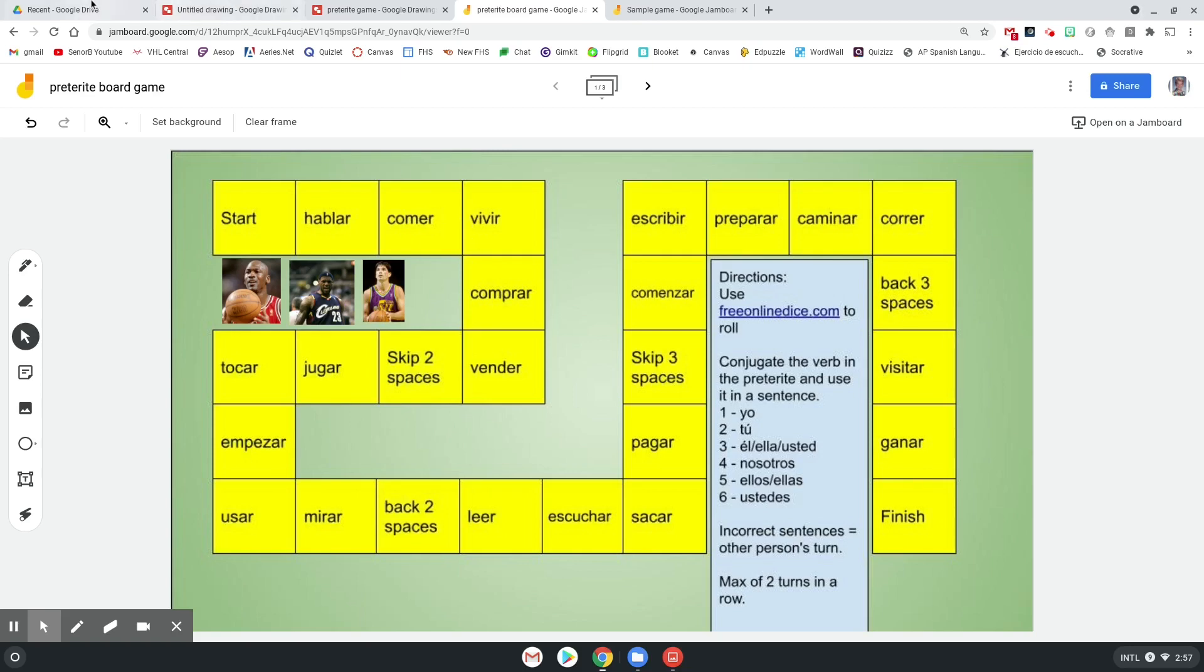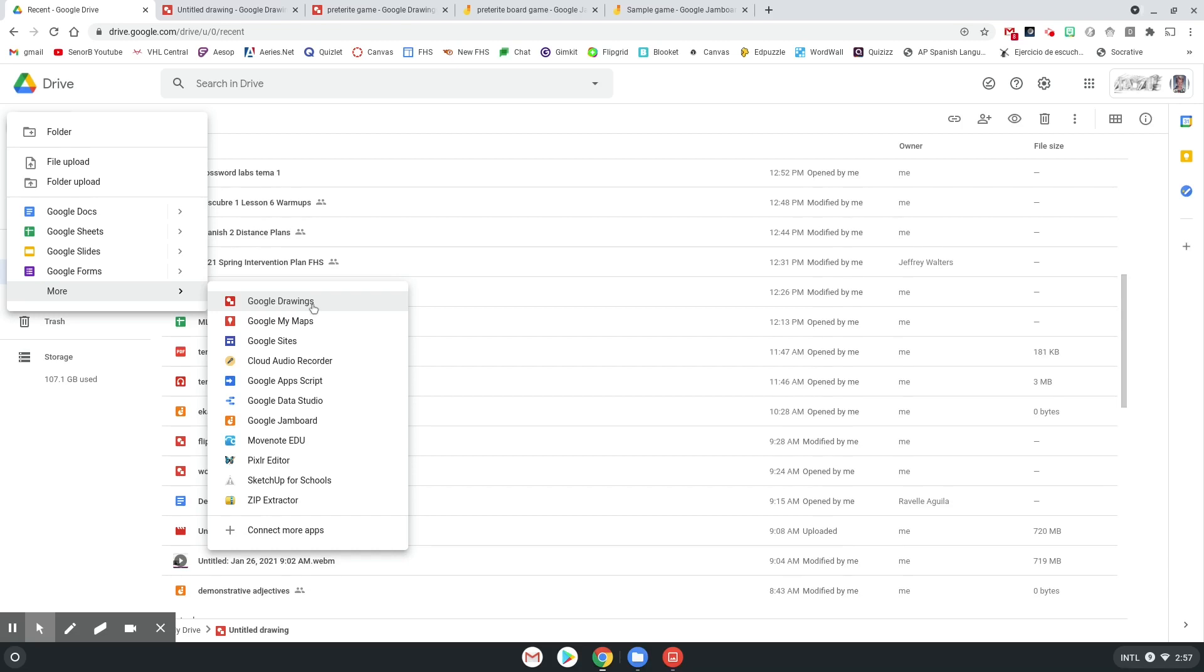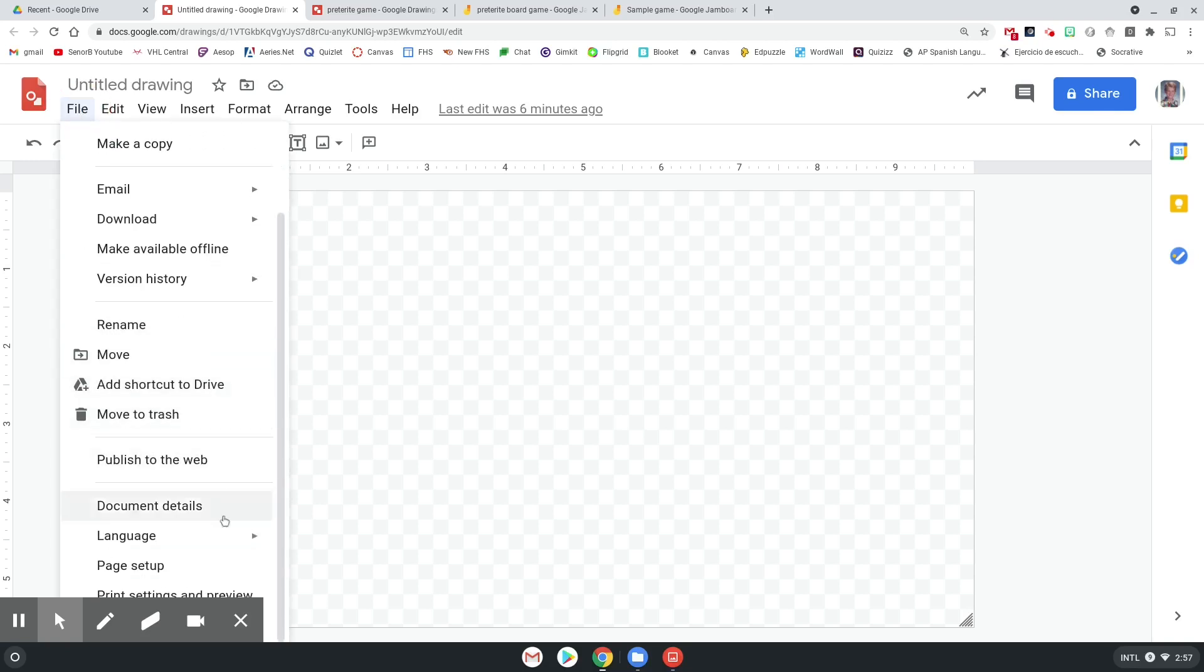So the steps for doing this are: one, go to your Google Drive, go to New, More, Google Drawings. You'll come up with a blank drawing that looks like this. The first thing you're going to want to do is go to File, Page Setup.